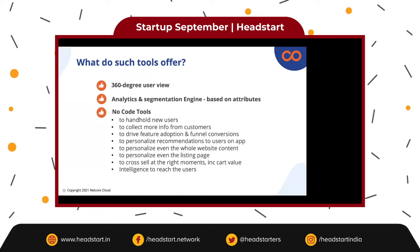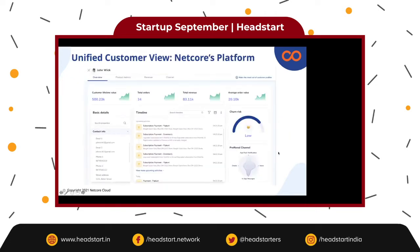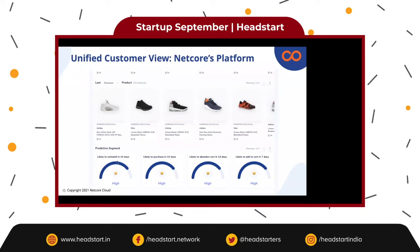Netcore is one of the companies that offers all of these tools. We start with connected content, which is your 360-degree user view. This is an example of a dashboard for a user called John Wick, where we see all the activities a user has done on our website, all activities on different communication channels — emails sent, messages sent, how the user came onto the app or website and what they did. We also see the revenue contribution from the user, various metrics, and all the different products they've checked out or liked.